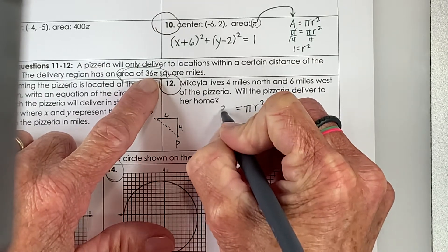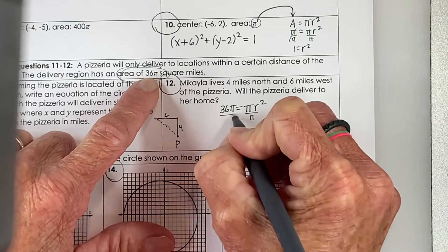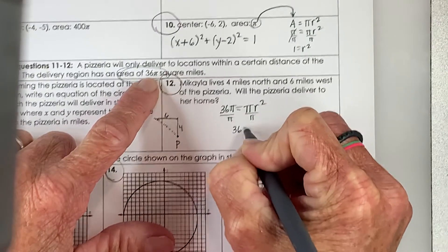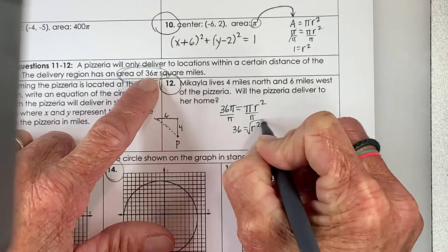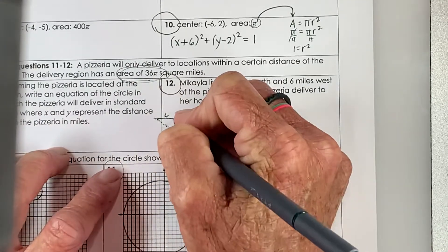So let's use our area formula for a circle, pi r squared, and we know that the area is 36 pi. We'll divide the pi's away. Okay, so 36 is equal to r squared. Take the square roots of both sides, and the radius is 6.